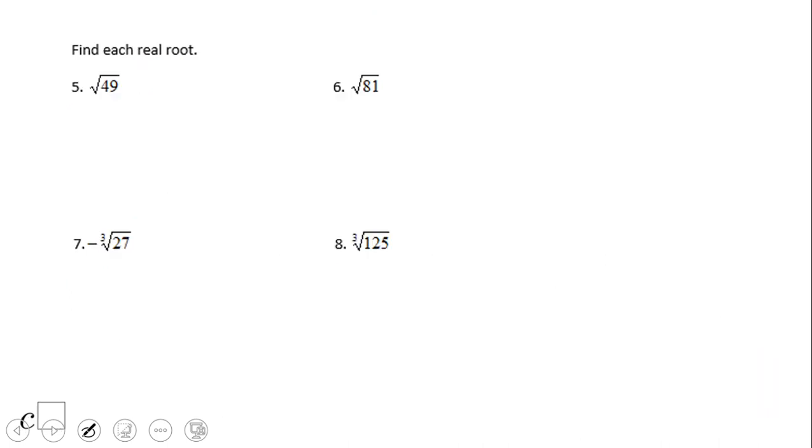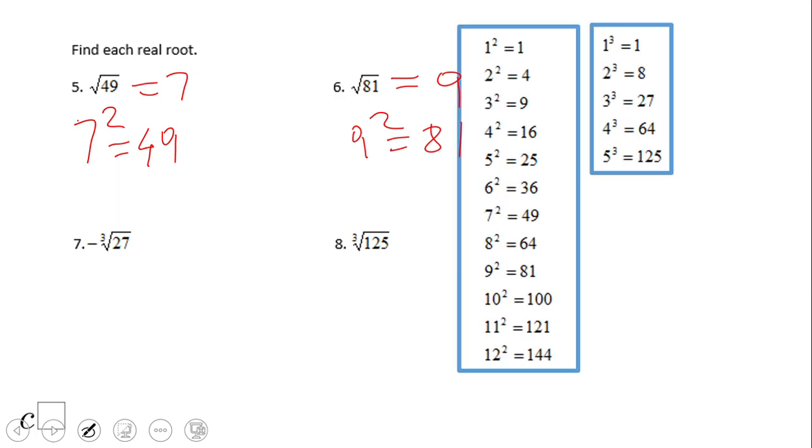Most of your problems are going to look like that. Find each real root. Square root of 49? Seven, right? Because 7 squared is 49. What about number 6? If you said 9, then you did wonderful. 9 squared is 81.